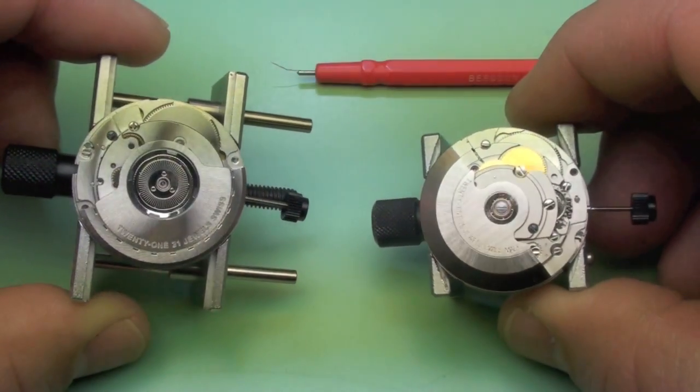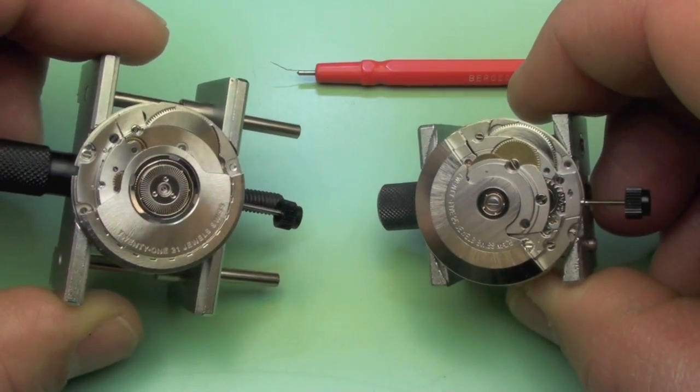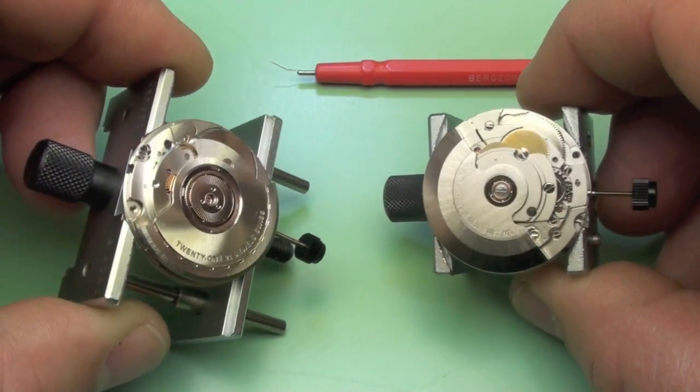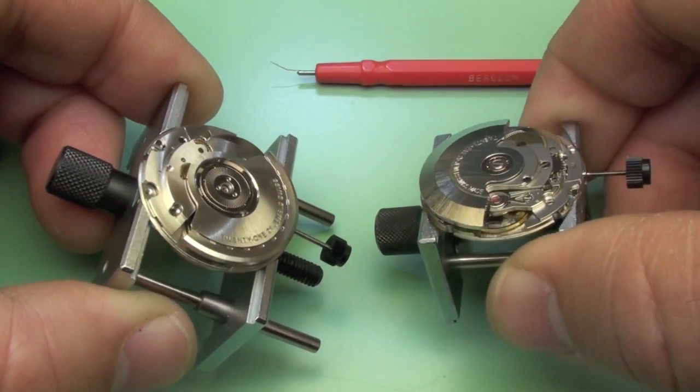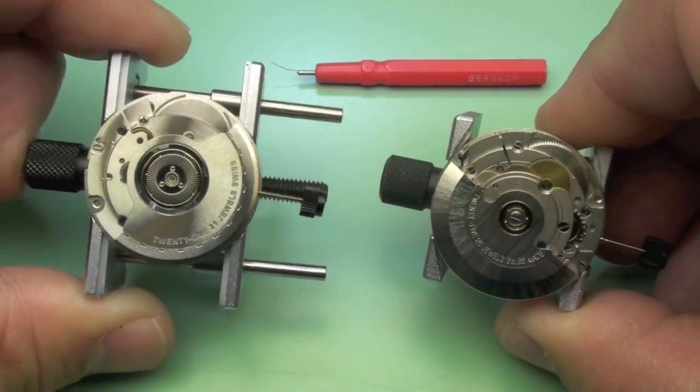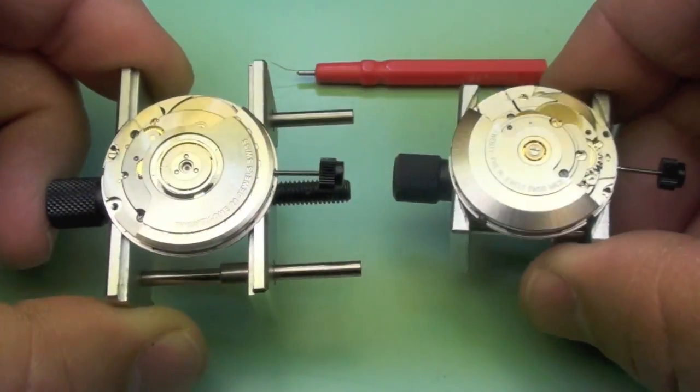An efficiently winding automatic mechanism is critical for ensuring the power reserve of an automatic watch. In this video, we will be demonstrating how to function check the efficiency of the reversers of the automatic module.